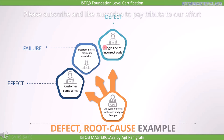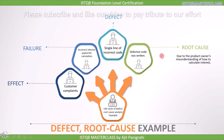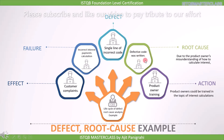The customer was trying to calculate his interest but received an incorrect result — this was the failure. When we analyzed this failure, we found it was caused by a single line of incorrect code. Investigating further, we found that the wrong code was written because of the product owner's misunderstanding of how to calculate interest — this was the root cause. Since the product owner did not know how to calculate interest, the action we take is to train the product owner in interest calculation so this never happens again.